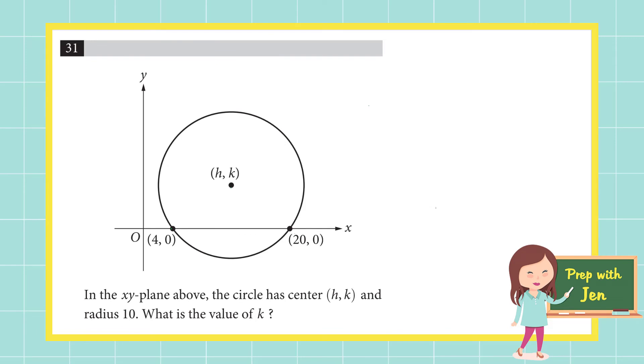Let's do one more together. This is number 31 from practice test 9 section 4. In the XY plane above the circle has center (h, k) and the radius is 10. What is the value of k? That's a pretty straightforward question. Anytime I deal with a circle keep this in mind: circle has two really important components, a center and a radius. As soon as you have a center point and you know the length of the radius you've got yourself a circle. So whenever I'm presented with a circle problem the first thing I want to do is to draw in my radius.